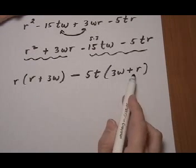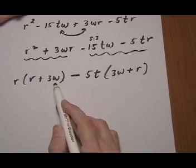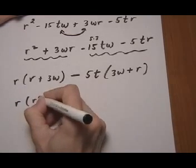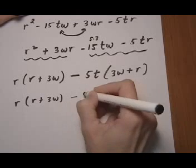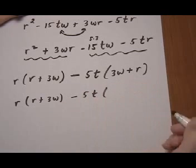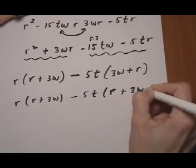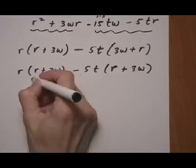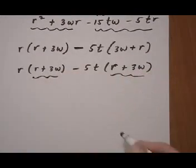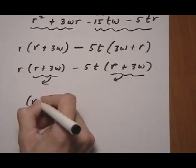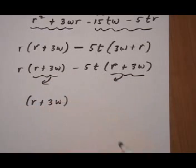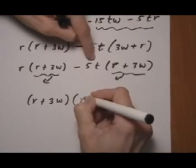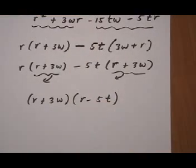And these two guys are the same, they're just in a different order. And because they're being added, it doesn't really matter which order I put them in. So I'll just rewrite the second one to look like the first one. Like that. So now we have R plus 3W is a common binomial. I'm going to pull that out. R plus 3W as a common factor. Leftovers go in parentheses. R take away 5T. And then we're done.